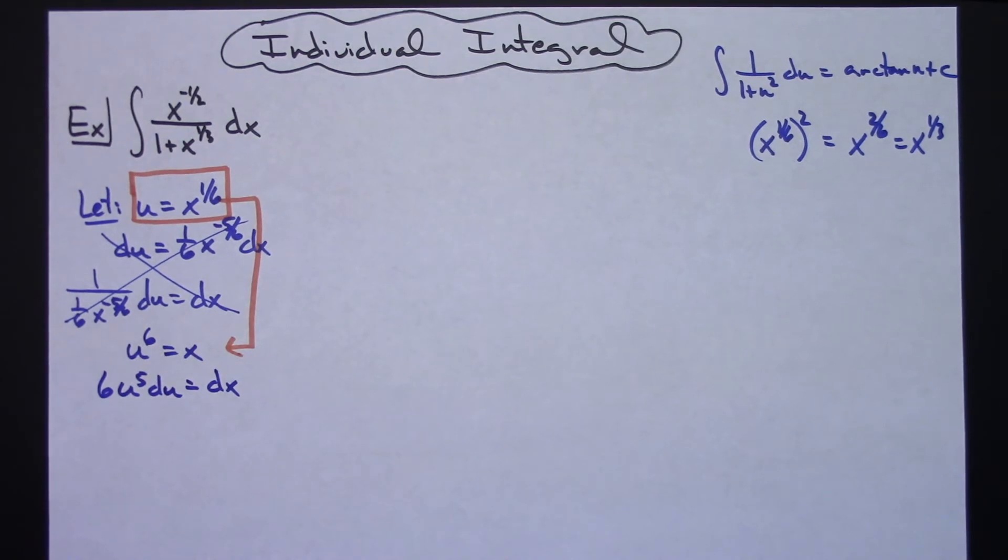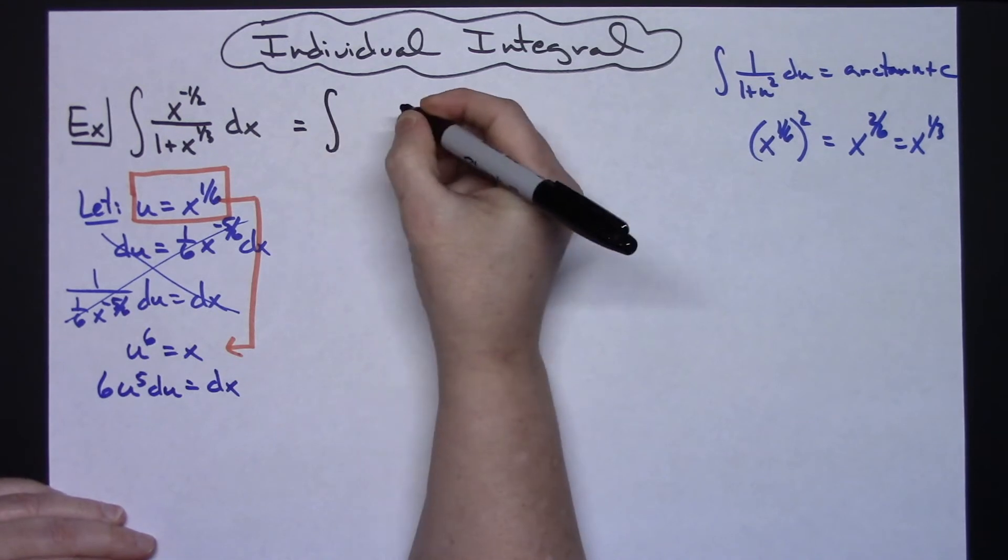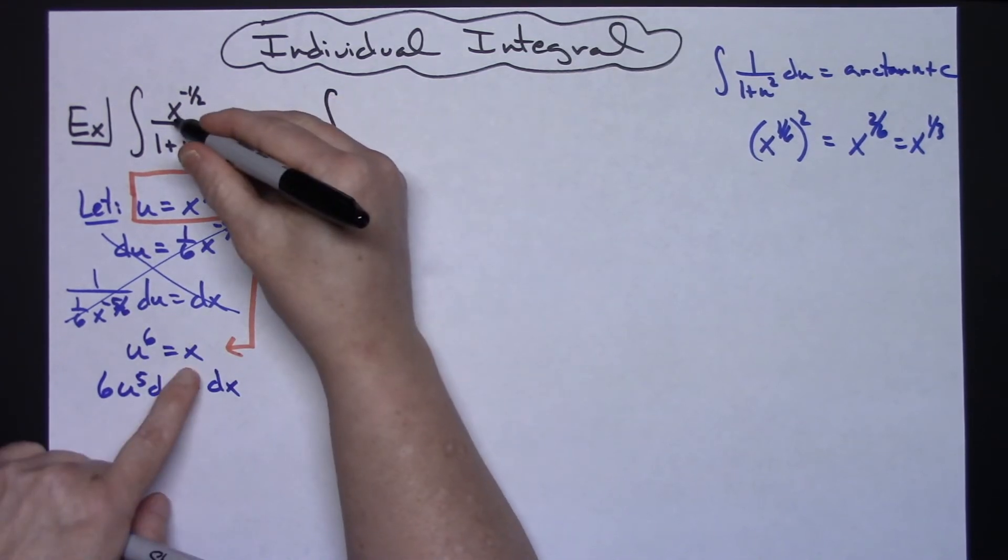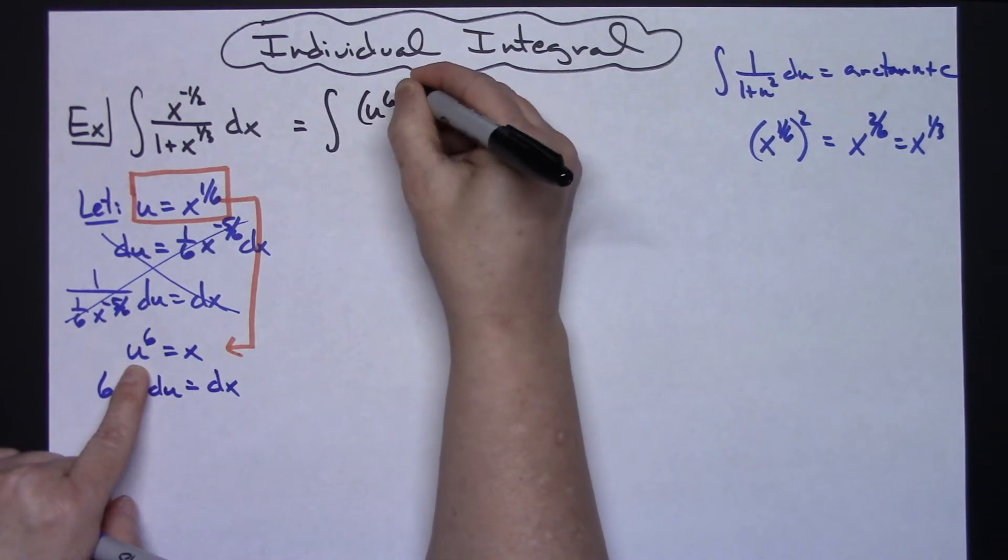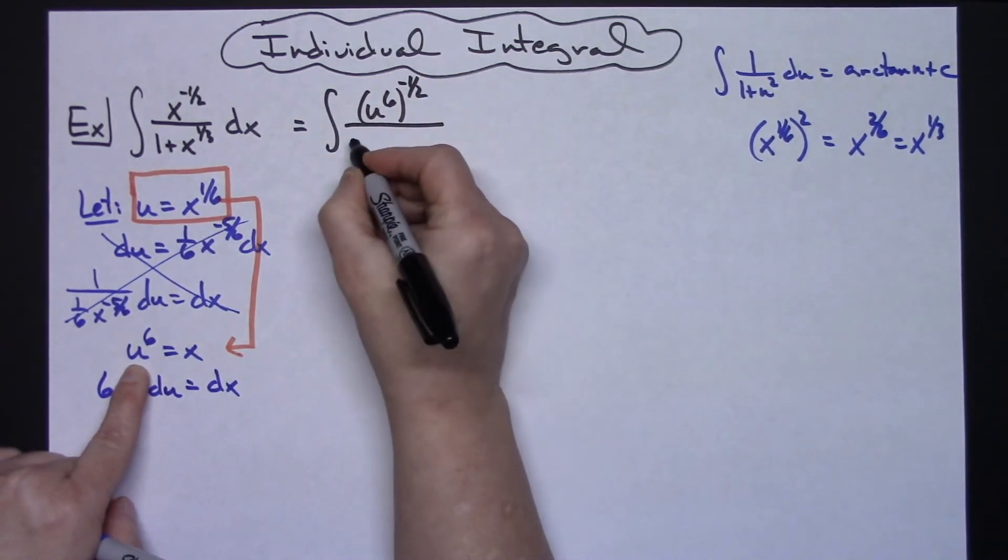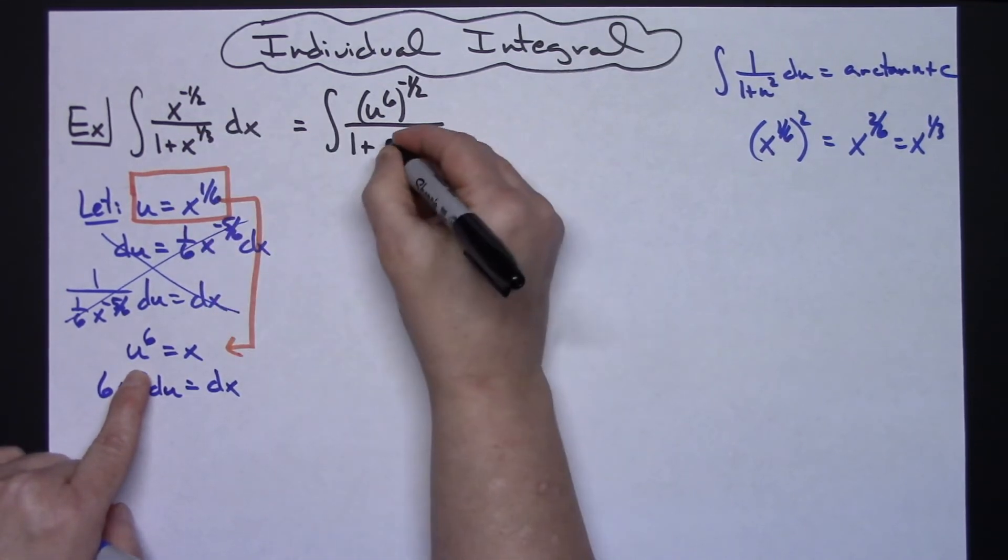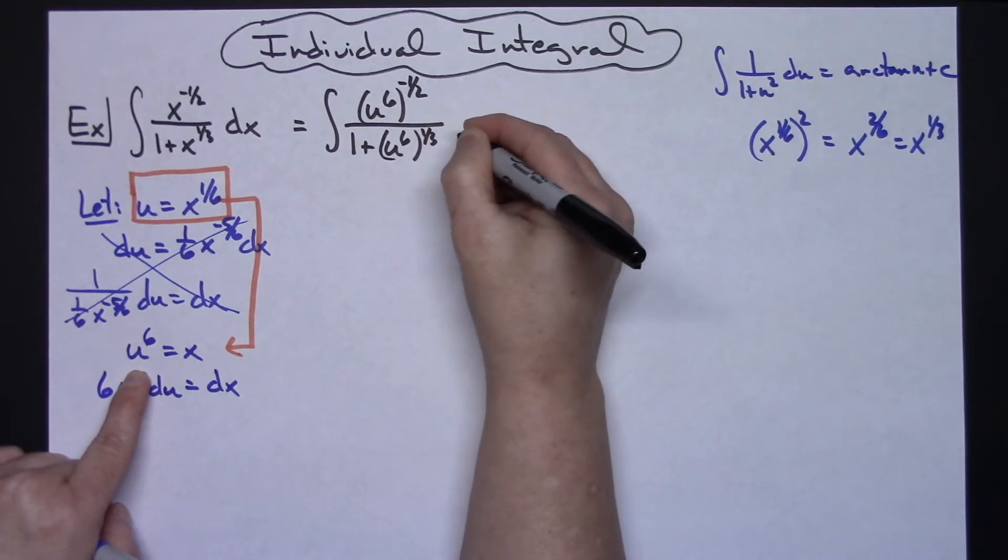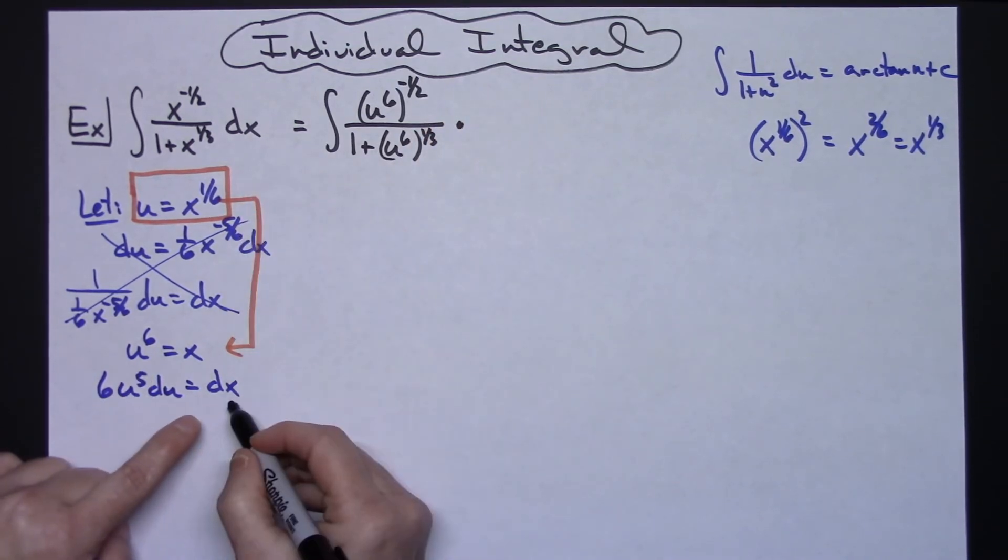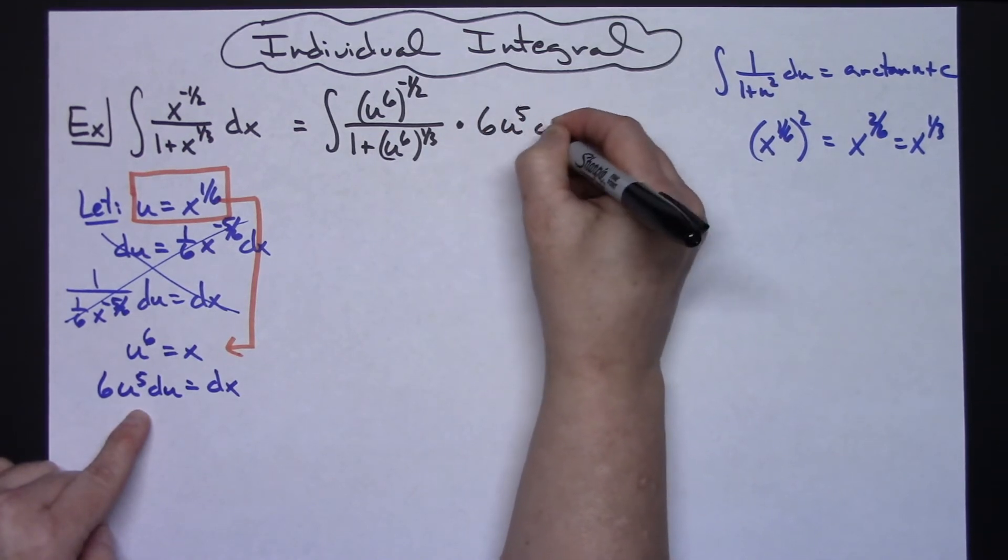So let's go to plugging this back in now. So we're going to have the integral, and then for that x, I'm going to replace it with a u to the sixth raised to the negative 1/2 power all over a 1 plus changing that x into a u to the sixth raised to the 1/3 power. And then replacing dx with the 6 u to the fifth du.